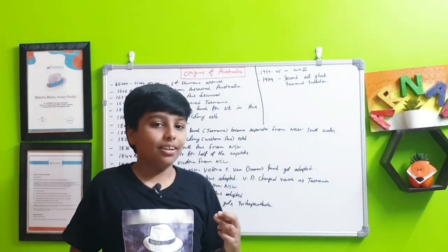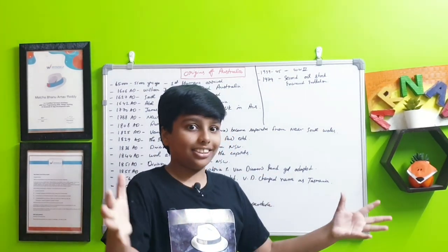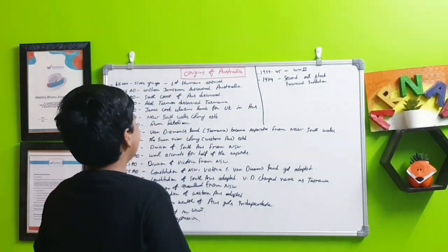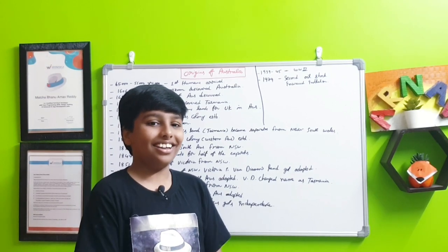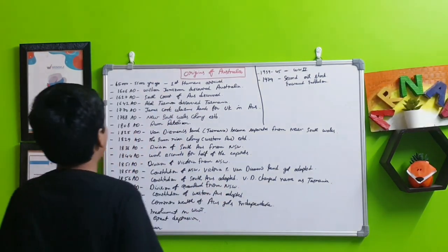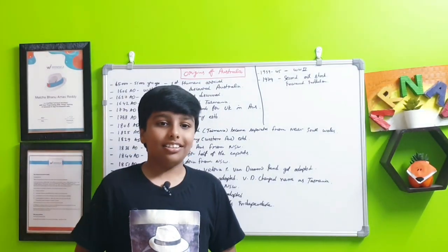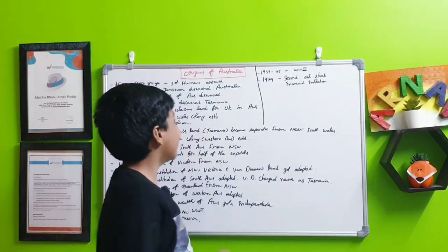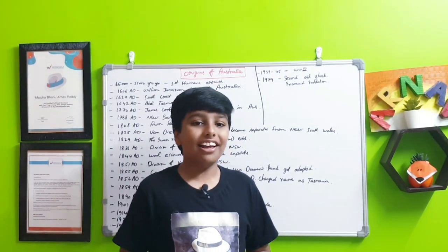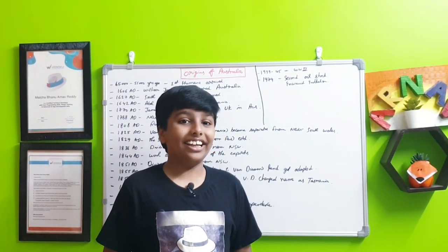At that time he was just going south for something, that is when he finds Australia. At that time it was called terra incognita because no one knew what it was. In 1627 AD the south coast of Australia is discovered. Before it was discovered that Australia had a south coast, they thought it was connected to Antarctica, even in maps it was like that.